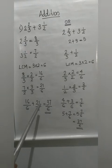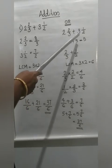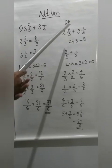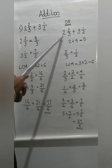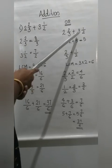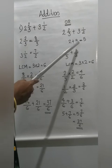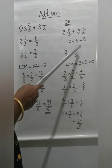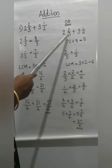This is one method. The other method: given 2 and 2 by 3 plus 3 and 1 by 2. First, add the whole number part alone. Here the whole number part is 2, and here it is 3. So 2 plus 3 = 5. The whole number part is done. Next, we have to add the fraction part.